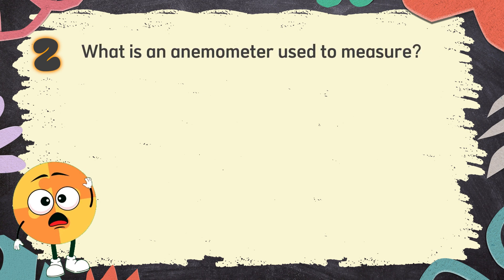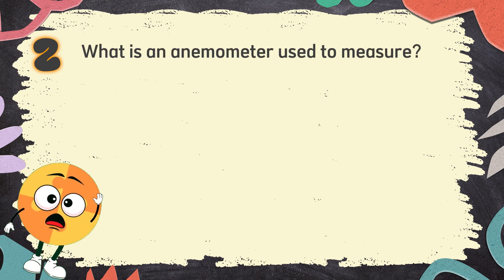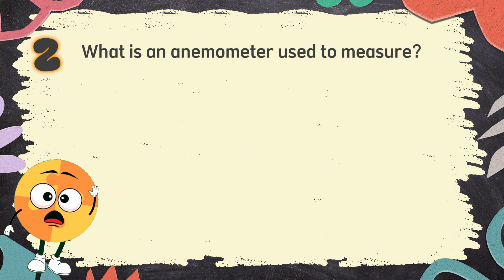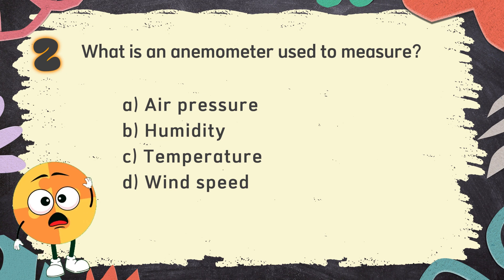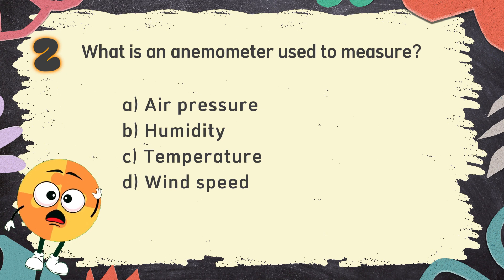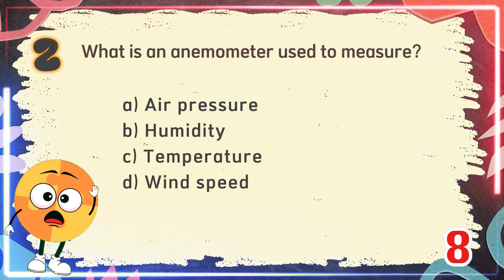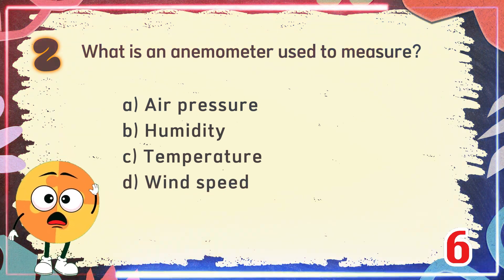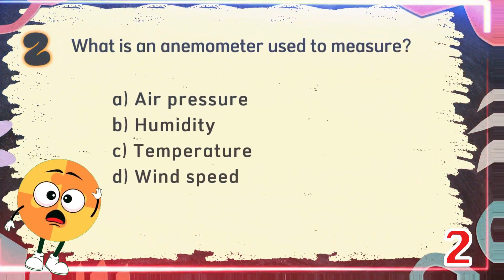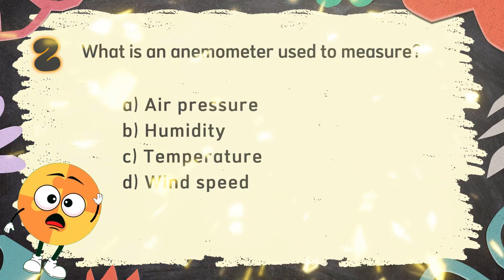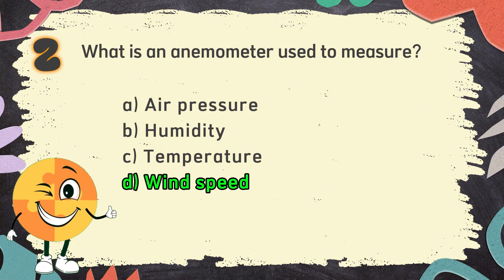Number 2. What is an anemometer used to measure? The choices are: A. Air pressure. B. Humidity. C. Temperature. D. Wind speed. The correct answer is D: wind speed.